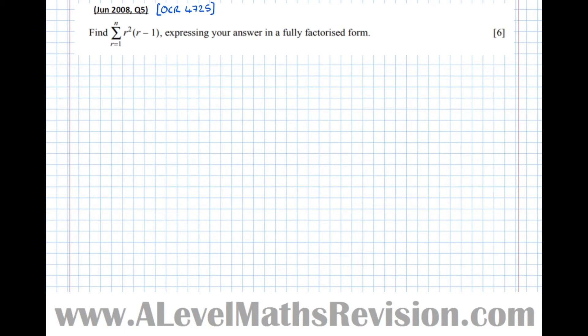In this video we're going to have a look at sums of series and how to get closed expressions for sums of series. The first thing we're going to look at is this question here — it says find the sum between r equals 1 and n of r squared times r minus 1, expressing your answer in a fully factorised form. These are a quite common type of question and there's not many twists that can really throw you, so it's a pretty standard method all the way through.